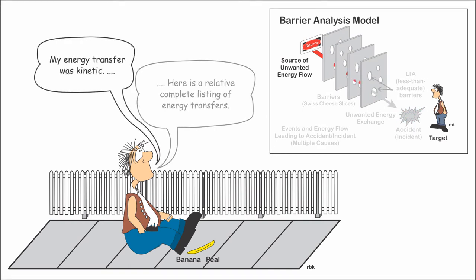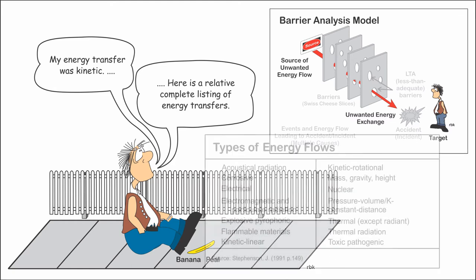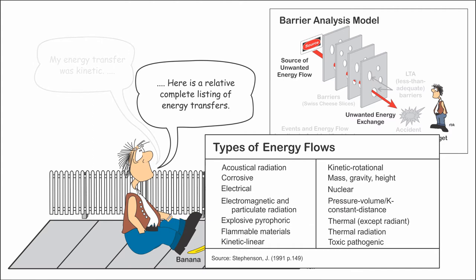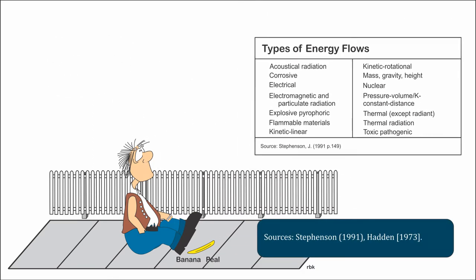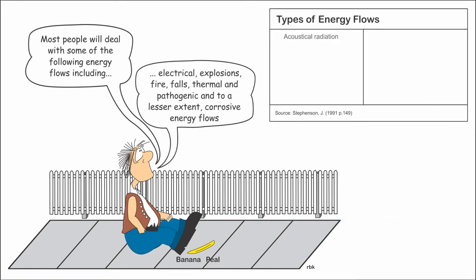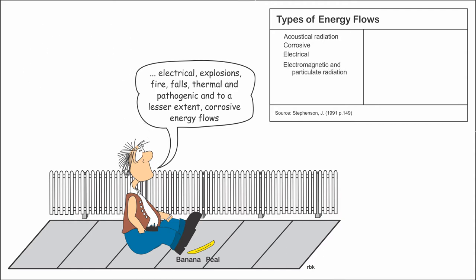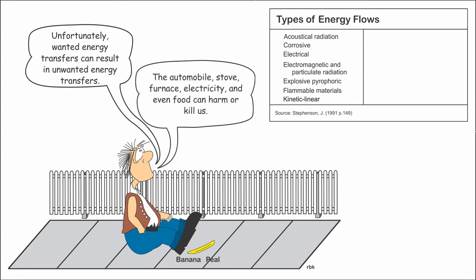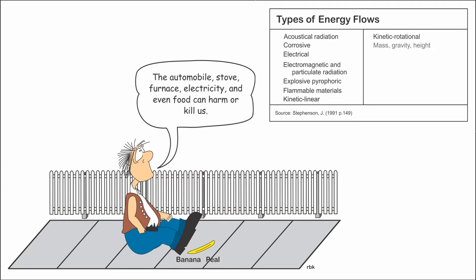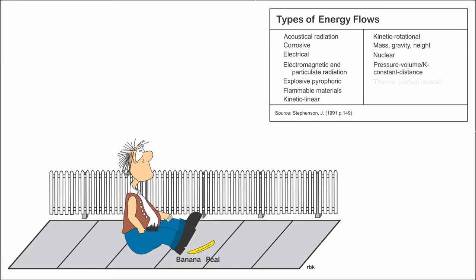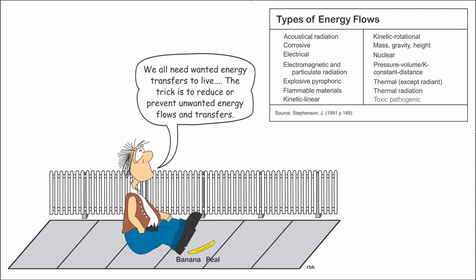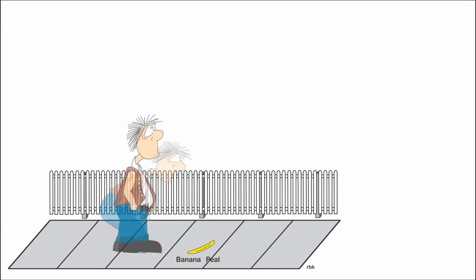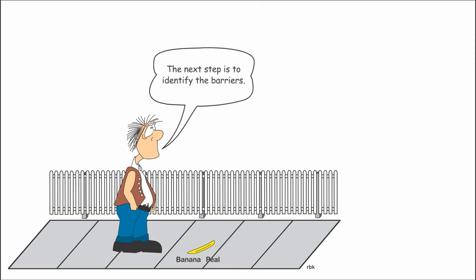The second step is to identify potential unwanted energy transfers. Stevenson lists a relatively complete listing of energy flow sources. Typically, most people will deal with corrosive, electrical, explosion, fire, fall, thermal, and pathogenic energy flows. Living involves wanted energy transfers; unfortunately, wanted energy transfers can result in unwanted energy transfers. The automobile that provides transportation can kill us. The stove that cooks our food can severely burn us. The furnace that heats our house can burn the house down. The electricity that runs all our conveniences can injure or kill us. The food we eat can poison us. Once the potential unwanted energy flows are identified, we can identify barriers and other measures to protect us.